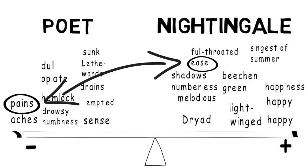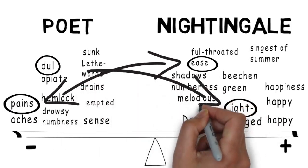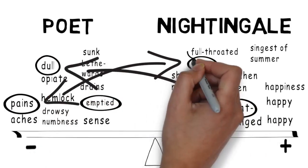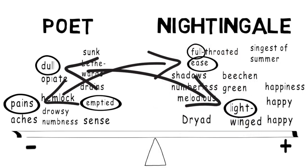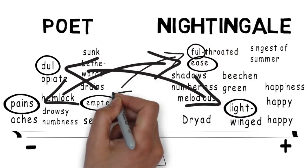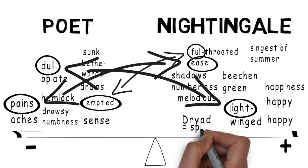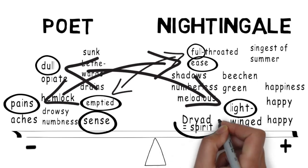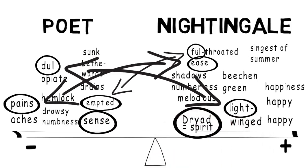And we can see other contrasts, dull and light. Emptied and full. Dryad, representing the spirit, and sense, the world of the physical body. And, no doubt, we could find many others.